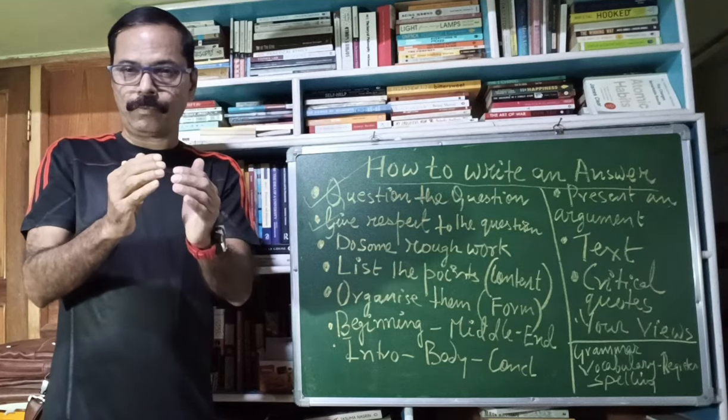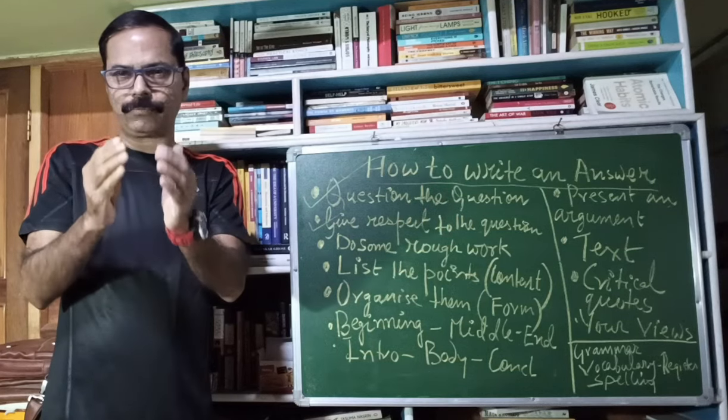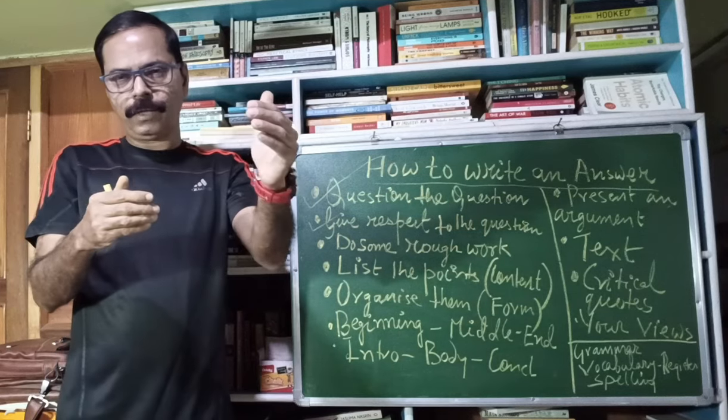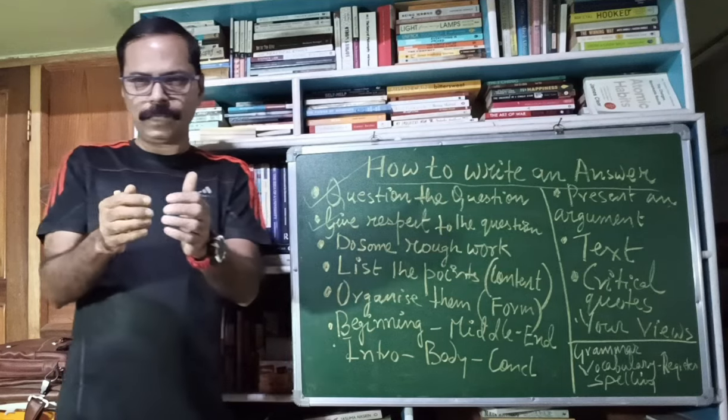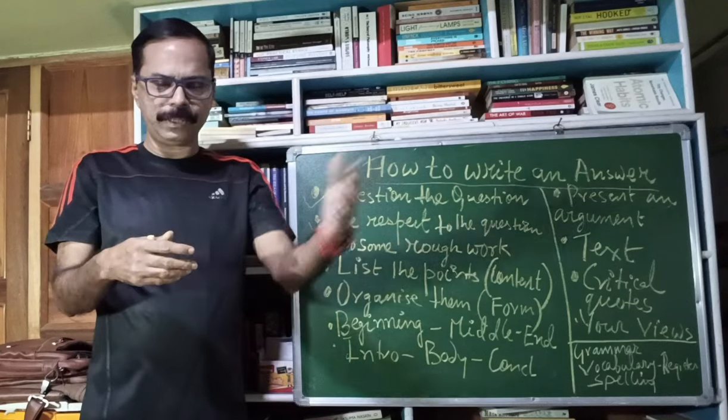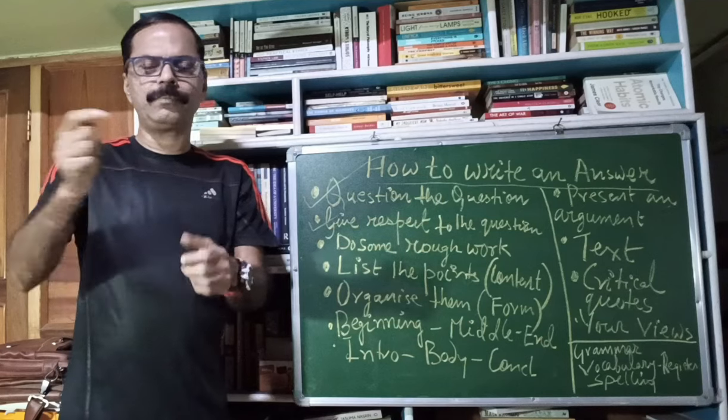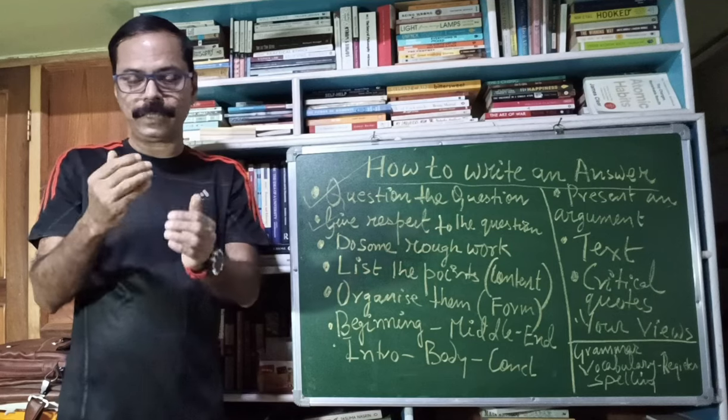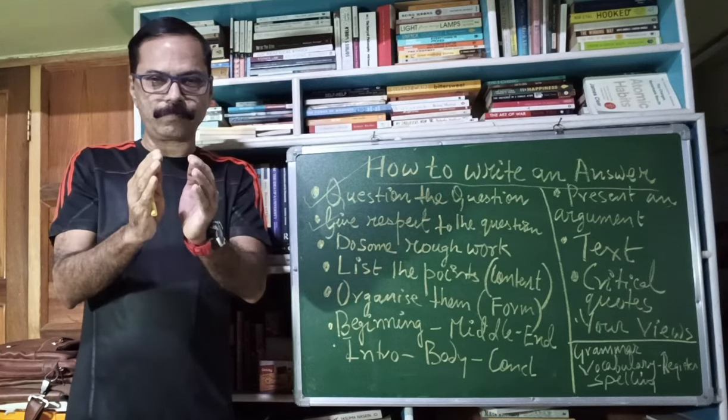The question will have a particular emphasis. You will have to find out what exactly the question wants, and accordingly you will have to start writing. Just don't straightway start writing. What students usually do in a literature question, for example if it's a question on Shakespeare's Hamlet, whatever the question is, they start writing the story of Hamlet. Therein they lose the plot. The answer becomes vague and the examiner has to find out where the answer is.